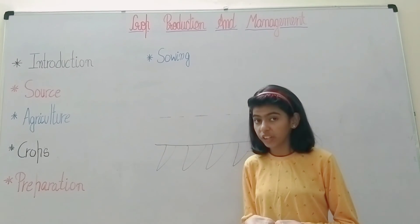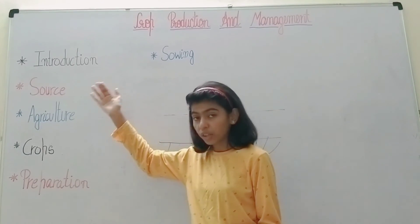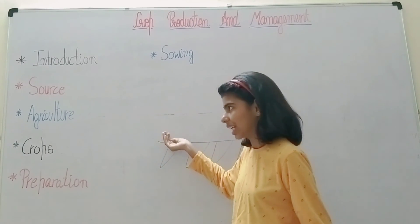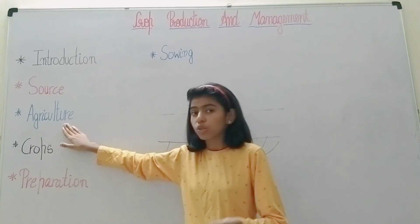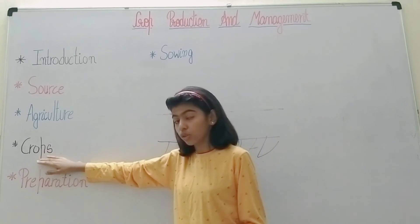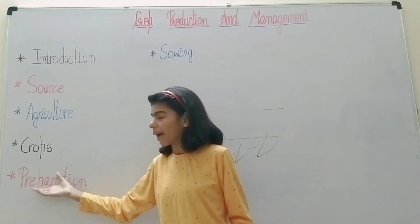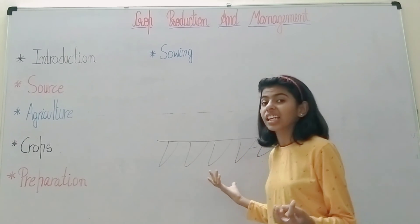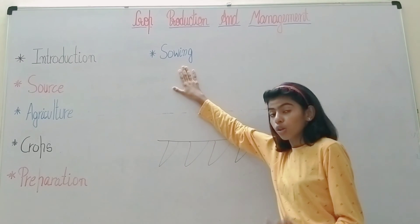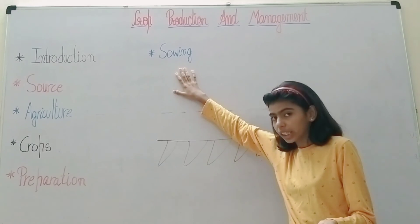In this video, we discussed why we need food, the sources of food eaten by humans, agriculture and its different parts, the three different types of crops and when they are grown, preparation of soil including plowing or tilling and leveling, and sowing including selecting seeds and sowing seeds. Thank you, friends.